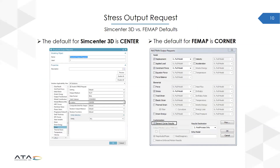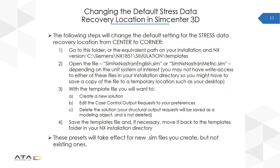What are the default stress output request options in SimCenter 3D and FEMAP? In SimCenter 3D, the default is the center output request option, as it is in SimCenter Nastran, whereas the default for FEMAP is the corner output request stress option. If you wanted to change the default stress data recovery location to corner instead of center in SimCenter 3D, the steps to do so are outlined on this slide.